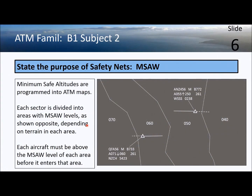MSAW — minimum safe altitude warning. The ATM system maps are programmed with minimum safe altitudes for different geographic areas, reflecting that area's terrain. The aircraft must not fly below the MSA. For example, here we can see that the minimum safe altitude is 6,000 feet.